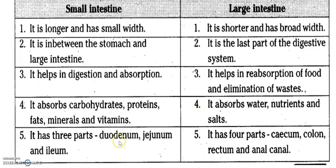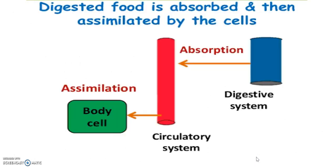The three parts of the small intestine are the duodenum, jejunum and ileum. The large intestine has four parts: cecum, colon, rectum and anal canal.